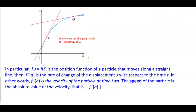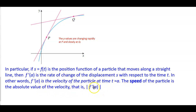In particular, if s equals f of t is the position function of a particle that moves along a straight line, then f prime of a is the rate of change of the displacement s with respect to the time t. In other words, f prime of a is the velocity of the particle at time t equals a. The speed of the particle is the absolute value of the velocity, which is the absolute value of the derivative, or f prime of a.